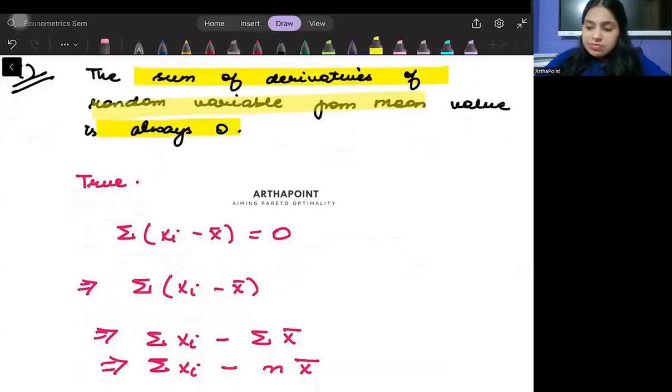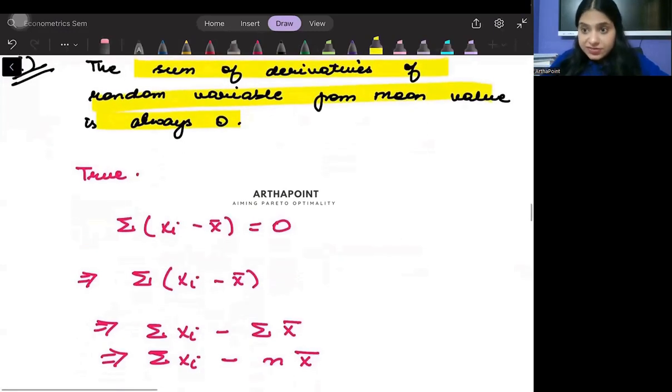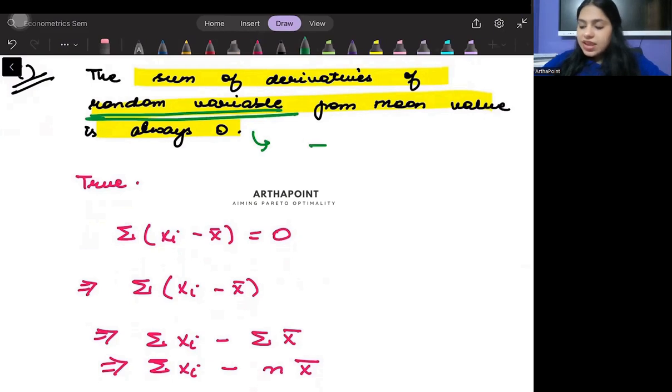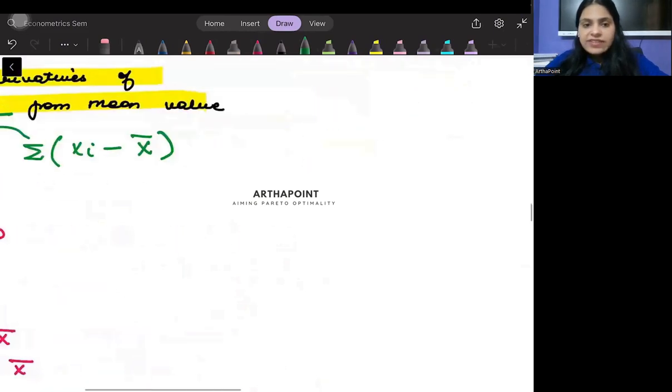Well, this is a true statement and we have also proved this in one of the questions earlier. So it is asking that if I take any random variable, say x is a random variable, and I find its deviation from mean, then it will always be zero and we can simply prove this.